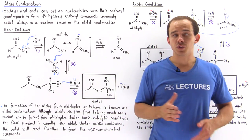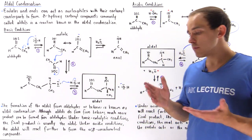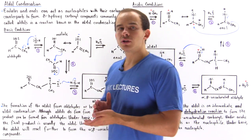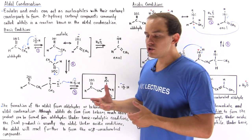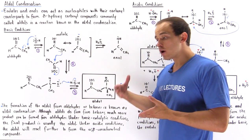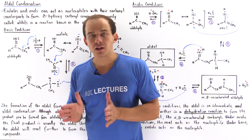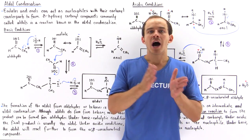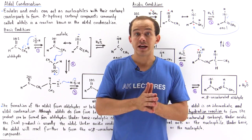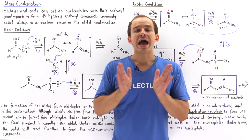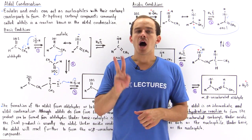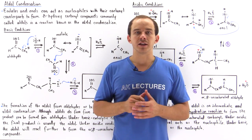Another very common type of reaction that deals with carbonyl compounds, enols, and enolates is known as aldol condensation. An enol or an enolate reacts as a nucleophile with the carbonyl counterpart to produce a molecule we call a beta-hydroxycarbonyl compound, simply known as aldol. This reaction is known as aldol condensation, and it takes place under two types of catalytic conditions.